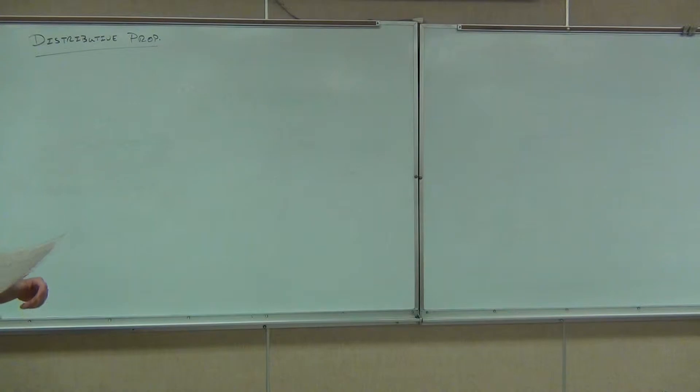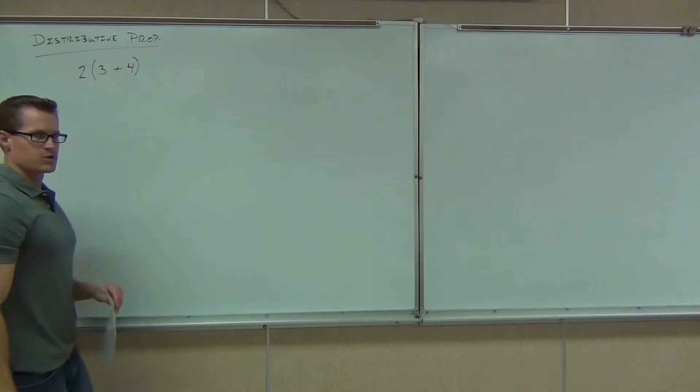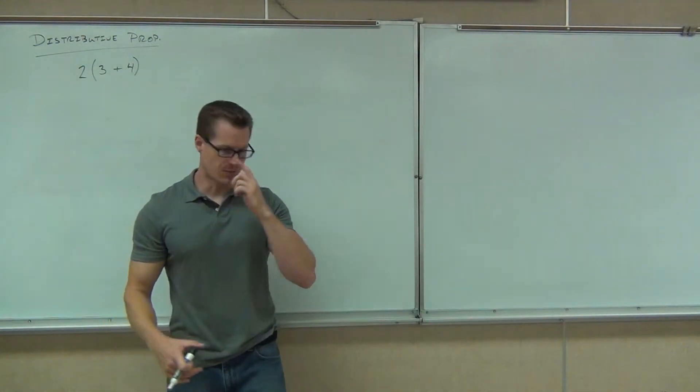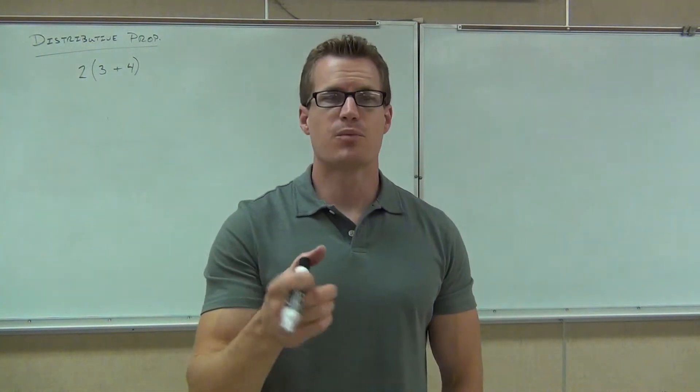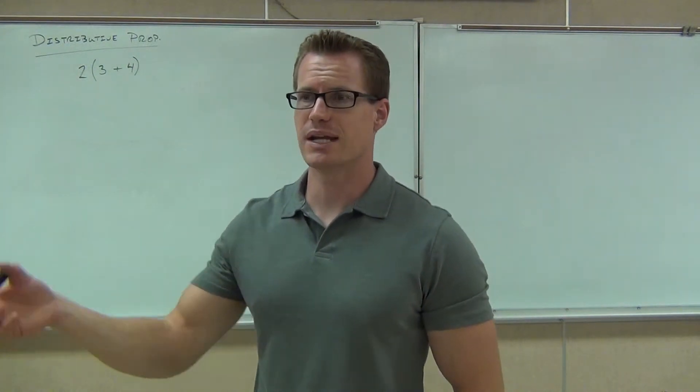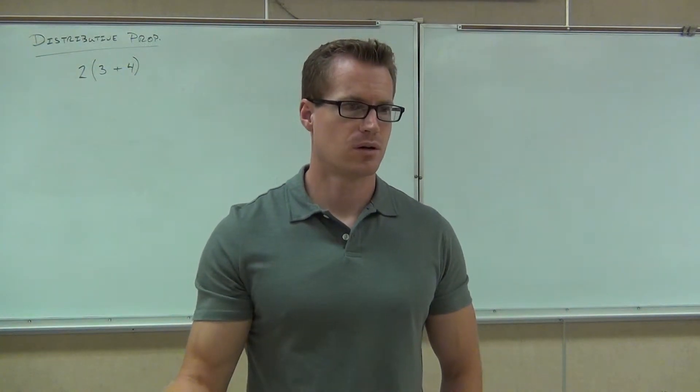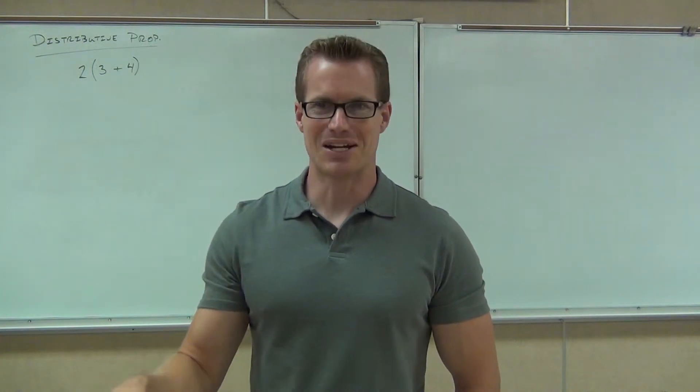Now, here's what the distributive property said for you. It said if I had a number and it was multiplied by some quantity inside of parentheses being added or subtracted, like we have up here 2(4+3), I told you there were two ways to do this. I told you most of the time we're going to be using order of operations, and what we do here is just do the four plus three, you get seven, and then we multiply that by two and what's our final answer? You get 14, are you with me?